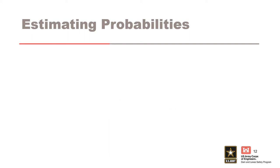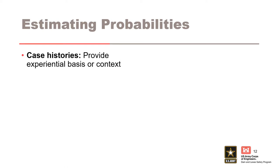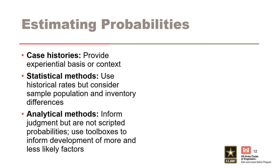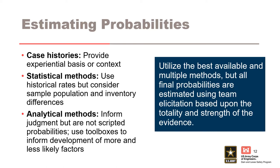There are three methods to help inform judgment when developing a list of more and less likely factors and estimating probabilities for each event in the event tree. Case histories provide historical context for conditions that lead to development of internal erosion incidents and failures. Statistical methods using historical rates provide some degree of ground truth or empiricism, but they must be used with caution as they may not apply based on how they were developed or the sample population used. Several analytical methods are also available that can be used to inform judgment, though results should be used to inform development of more and less likely factors. When estimating probabilities, the use of multiple methods is encouraged, but not all may be given equal weight. Be as objective as possible and make the best estimate, not a conservative estimate, due to the significant investments involved with remediation and repair.